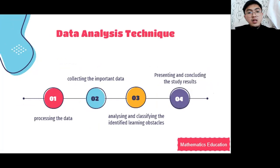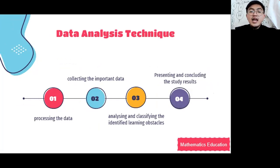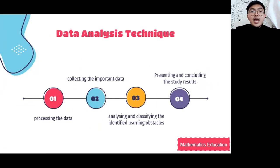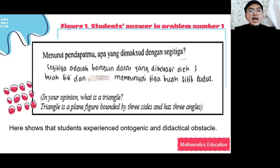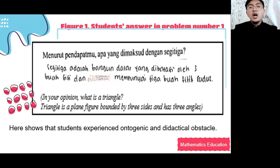The study uses qualitative data analysis technique as follows: first, processing the student diagnostic test results, interview results, and document analysis results; second, collecting important data about learning obstacles experienced by students; third, analyzing and classifying the identified learning obstacles; fourth, presenting the data descriptively and concluding the study results. The results show that students experienced learning obstacles which, based on Brousseau (2002), are classified into three types: didactical obstacle, epistemological obstacle, and ontogenetic obstacle.